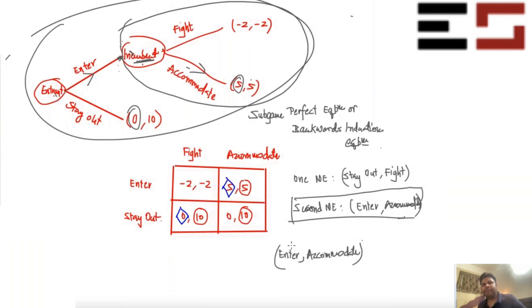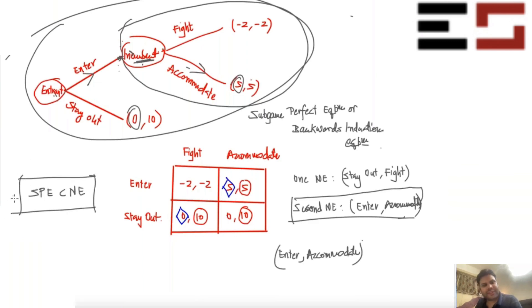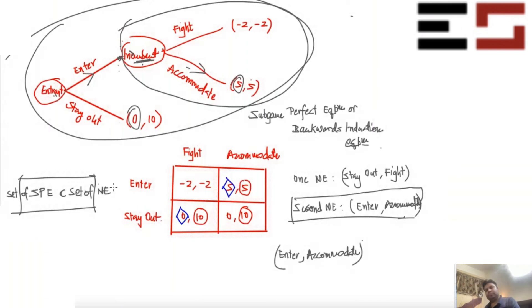Sub-game perfect equilibrium has some added logic to it. The set of sub-game perfect equilibria is a subset of the set of Nash equilibria.